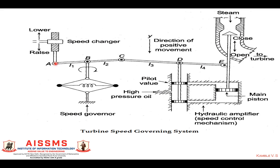Suppose we want to increase the speed of the generator. With the help of the speed changer, if we move the speed changer downward — that is, on the lower side — then A moves downward, B moves upward, C downward, D upward, and E downward. D upward means the high-pressure oil moves in that direction, causing the main piston to move downward. If the piston moves downward, the steam valve opening is increased — that is, the rate of flow of steam is increased. The turbine rotates at a higher speed, the generator rotates at a higher speed, and it increases the active power.